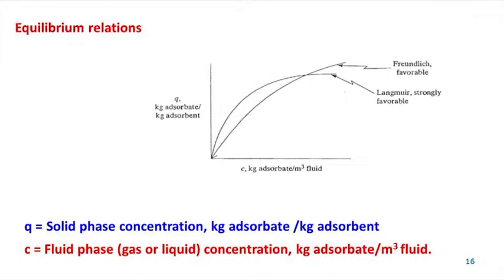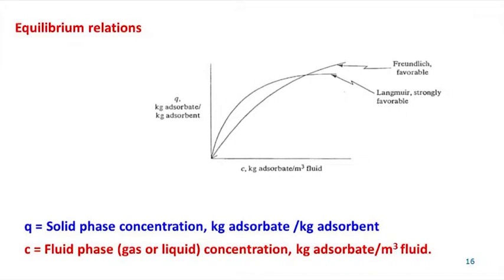The concentration in the solid phase is expressed as Q in kg of adsorbate per kg of adsorbent. The concentration in the liquid phase is expressed as C in kg of adsorbate per meter cube of fluid. The Freundlich isotherm, which is empirical, often approximates data for many physical adsorbent systems and is particularly used for liquids. The equation is Q equals K times C raised to N, where Q is the concentration in the solid phase, C is the concentration in the liquid phase, and the two constants K and N must be determined experimentally.